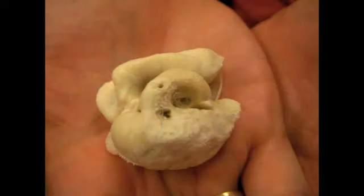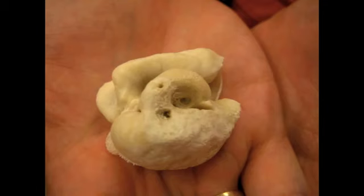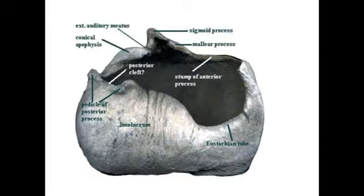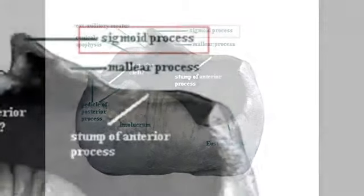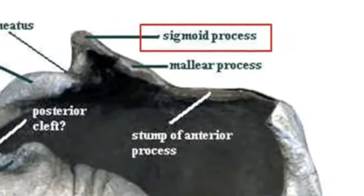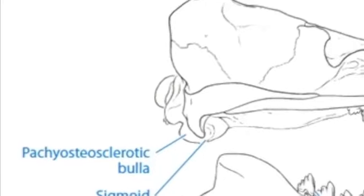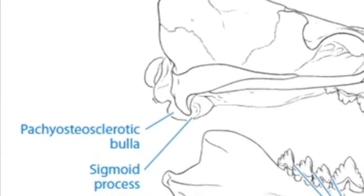In modern cetaceans, the auditory bullae are only attached to the rest of the skull by soft tissue. This is an adaptation that allows modern cetaceans to perceive directional sound under water. But it also means that when cetacean skulls are prepared, you can actually hold the things — and even just doing that, you can feel how heavy they are relative to their size compared to other bones in the cetacean skeleton. Another key feature of cetacean auditory bullae is the presence of a wave-shaped crest on the tympanic region, termed the sigmoid process, whose presence has aided in the classification of many important fossil discoveries.